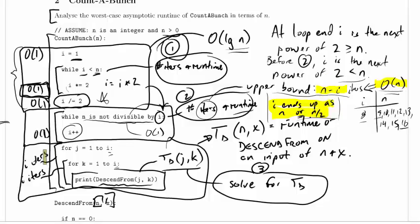Next up, we said earlier that this outer loop goes exactly i iterations. The inner loop goes exactly i iterations. And then, inside of here, we don't know just how long it takes in order to call descend from. So we've defined this new function, td.